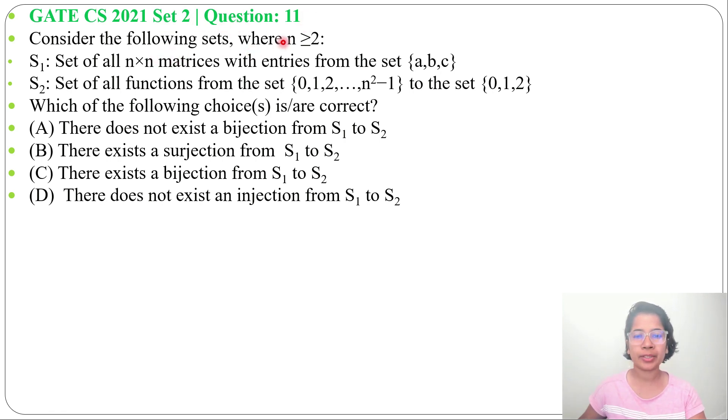Consider the following sets where n is greater than or equal to 2. S₁ is the set of all n×n matrices with entries from the set {a,b,c}. S₂ is the set of all functions from the set {0,1,2,...,n²-1} to the set {0,1,2}. Which of the following choices are correct? Four options are given.